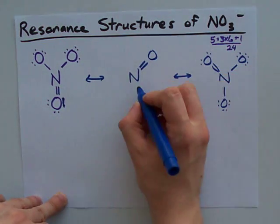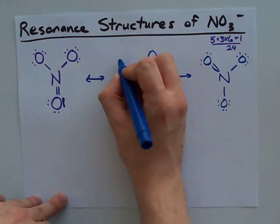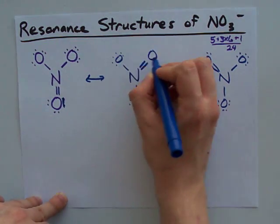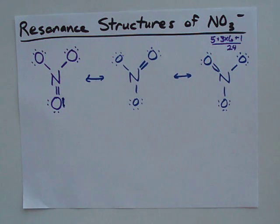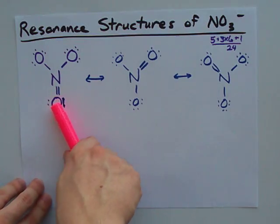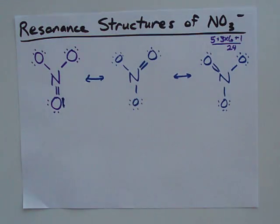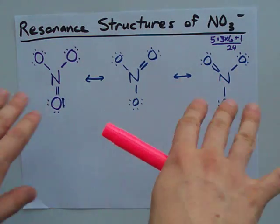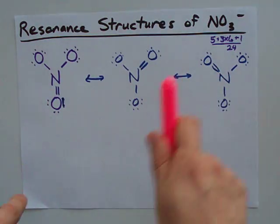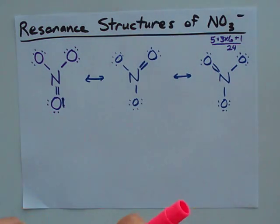Let me just finish filling in all my... There we go, 24 electrons each. And you'll notice the only difference between them is that sometimes the lower oxygen gets the double bond, sometimes this oxygen does, and sometimes this oxygen does. The actual structure for the NO3 minus ion is a combination of all three of these.